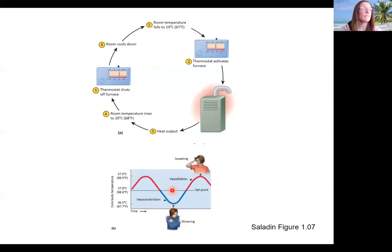Vasodilation is the dilation, opening of your blood vessels that helps to cool you off. It's something that happens with the autonomic nervous system, so it happens automatically. You don't have to think about it. Vasoconstriction happens when you get cold. Also like blood shunting to the core, so your hands get cold. And here's a cat. So that again is seeing those oscillations around the set point.